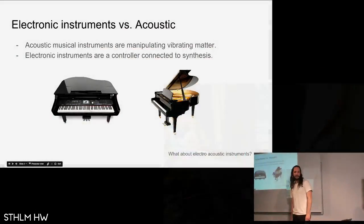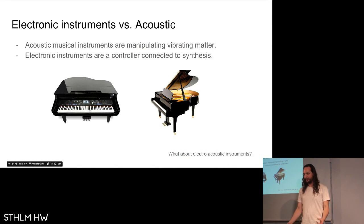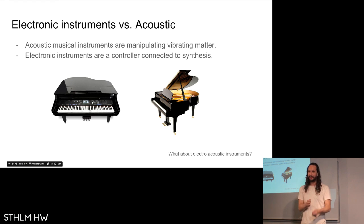Electronic musical instruments versus acoustic musical instruments. An acoustic musical instrument is basically a piece of matter that you get to vibrate in different ways. That is every musical instrument ever. You get it to vibrate by blowing on it or hitting it or grinding it or making a really complex thing that has a lot of vibrating parts. Electronic musical instruments, as you can see on the picture here, are completely different because they are actually a synthesis thing, what Håkan was talking about, a synthesizer that is connected to a controller.